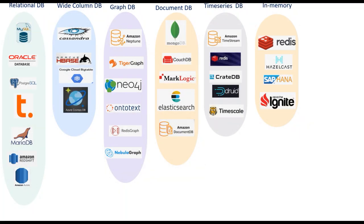Next up is cloud-based Software-as-a-Service: Snowflake. Snowflake is a cloud-based relational database for building data warehouses, built on AWS, Azure, and Google Cloud Platform. Snowflake's data warehouse uses a new SQL database engine with a unique architecture designed for the cloud, making it an analytical data warehouse provided as Software-as-a-Service.